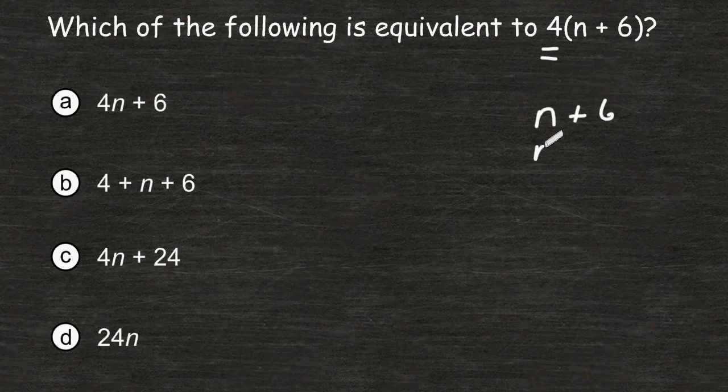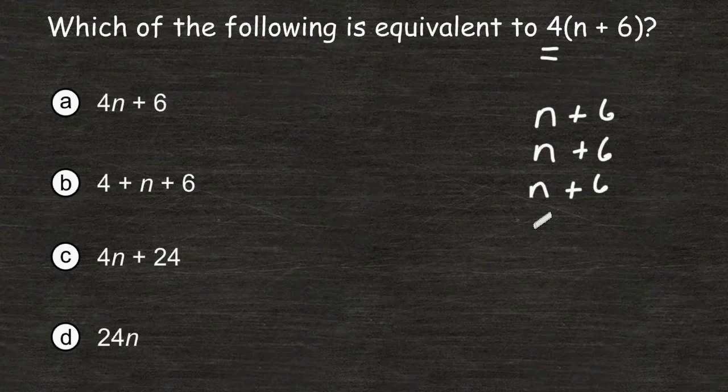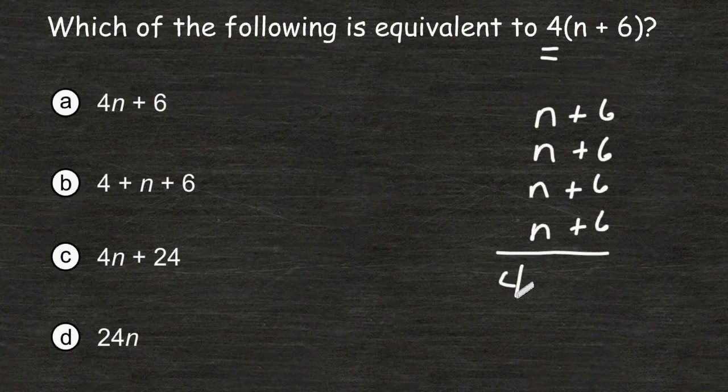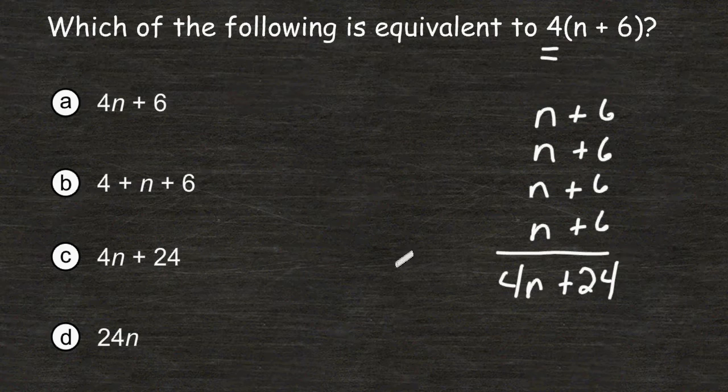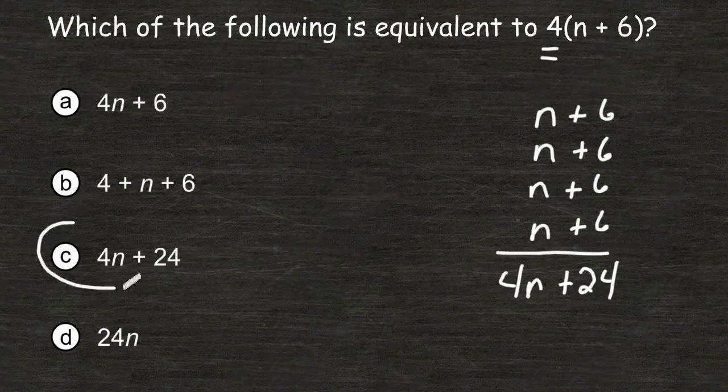So we could write n plus 6 a total of 4 times to figure out what that's equal to. Now if you notice, we have 4 n's here, so if we add all of these n's together, that would be 4n. And if we add all of these 6's together, that would give us a total of 24. As you can see, choice C says 4n plus 24, so that is the correct answer.